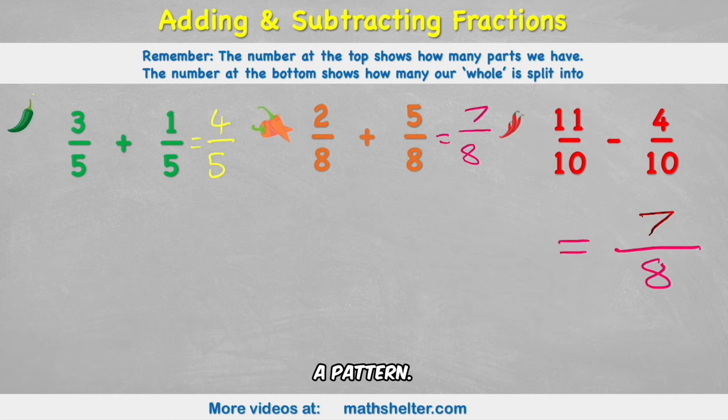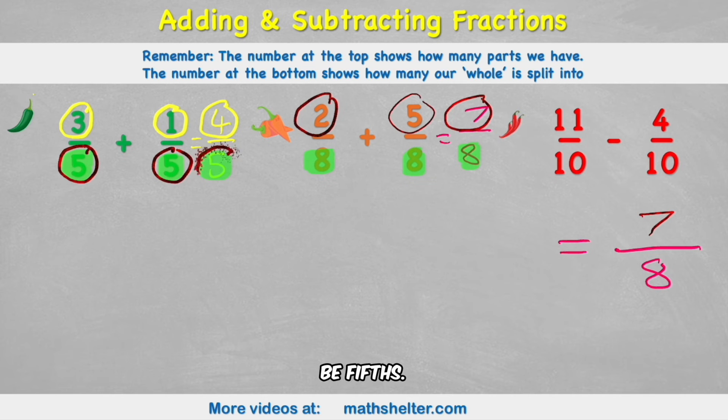Now let's see if we can find a pattern. Let's look back to our green chilli challenge. I had 3 fifths plus 1 fifths and that equaled 4 fifths. And if we notice, my fifths never changed. And all I ended up doing was adding my numerators. 3 plus 1 equals 4. Let's see if that worked with the second example. 2 eighths plus 5 eighths equals 7 eighths. Well, look, my eighths never change. And if I just add my numerators, 2 plus 5 equals 7. So a little tip for us. If our denominators are the same, so we have a 5 and a 5, then our denominator will always be fifths. And then all we need to do is add or subtract the numerator.